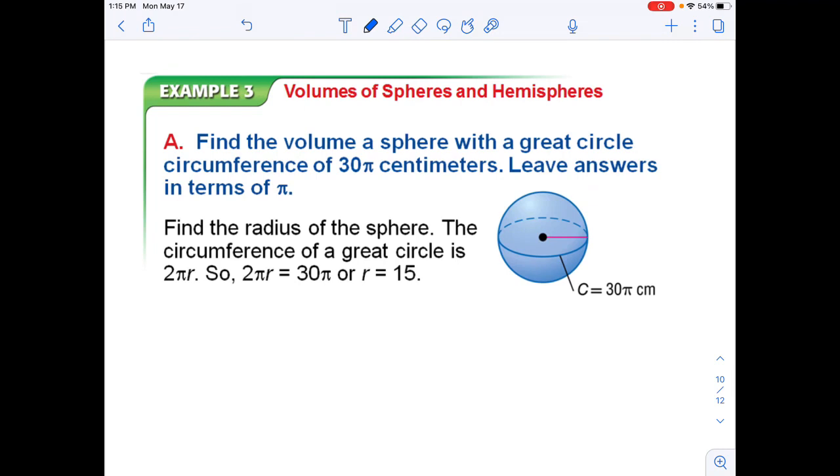You're going to find the volume of the sphere with a great circle circumference of 30π centimeters. Leave answers in terms of π. So find the radius of the sphere. The circumference of the great circle is 2πr. So if we set these equal, we go ahead and divide by 2π. We end up getting our radius is 15. And we can plug that into our volume equation, 4πr³ divided by 3.